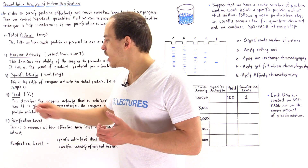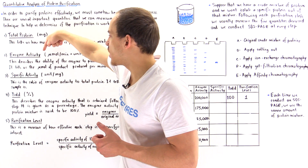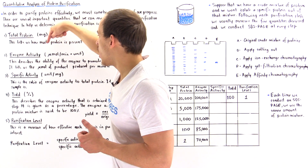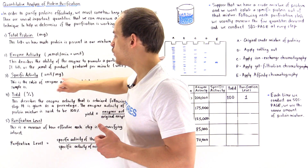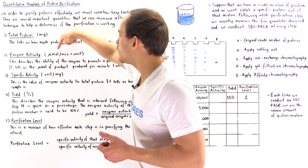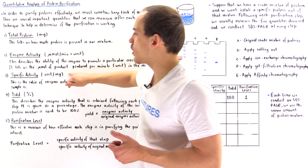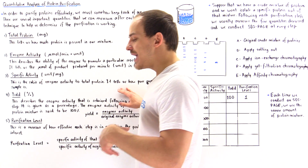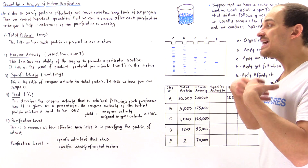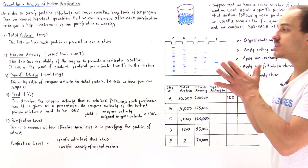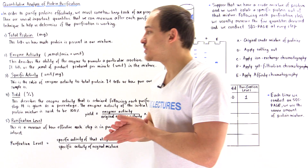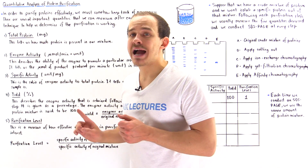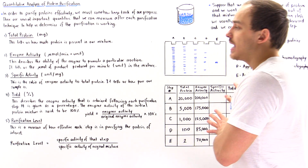What about the specific activity? The specific activity is simply the ratio of the enzyme activity to the total protein. The units are units per milligram, or micromoles per minute per milligram. The specific activity tells us how pure, or by how much more pure, our sample is following that purification technique. Usually, if the technique actually works, this specific activity value has to increase, as we'll see in just a moment.